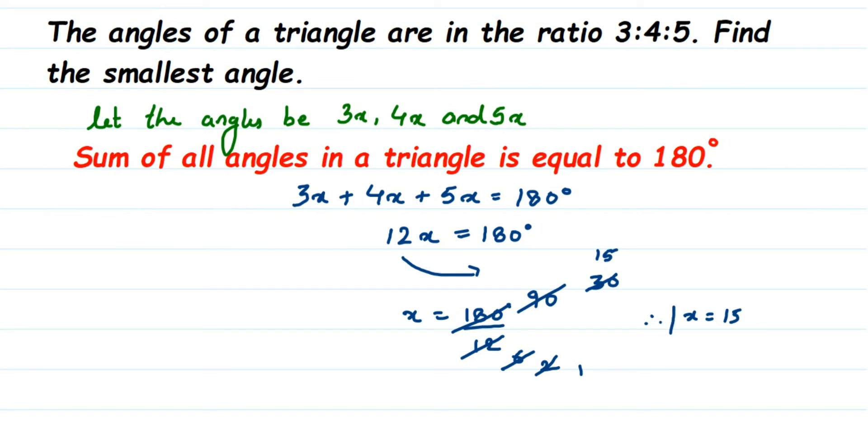Now, this is only the x value but the question is asking us to find out the smallest angle. If you see here between 3x, 4x and 5x, which one do you think is the smallest? It's 3x because if you substitute the x value with 4 or 5, they are greater numbers compared to 3. So, 3x is the smallest angle here. We're going to find out the smallest angle.